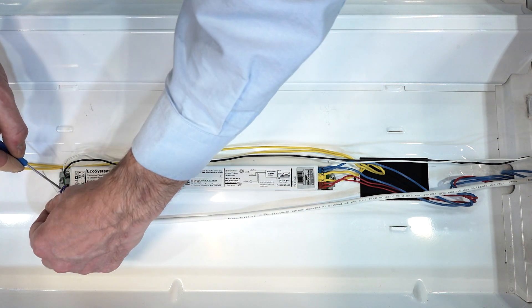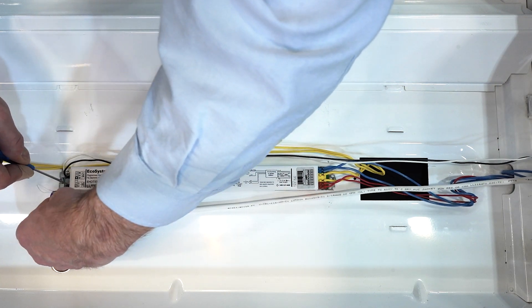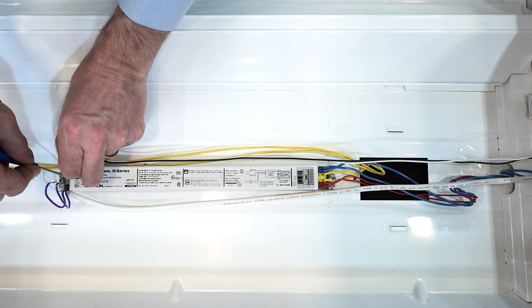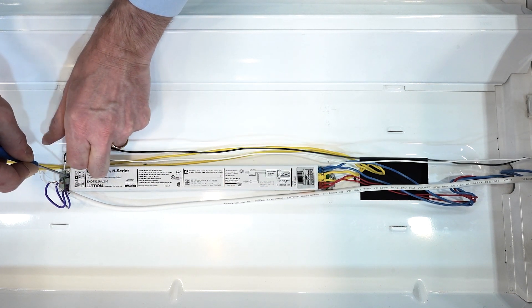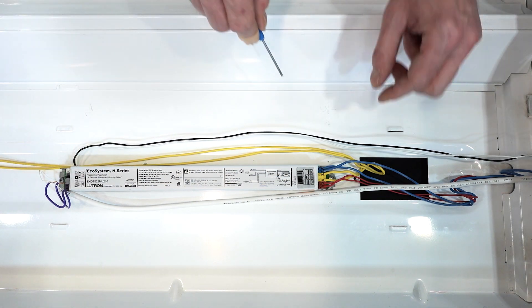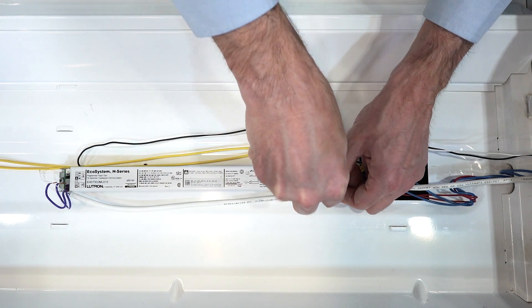Then, you can unwire the existing ballast. Start with disconnecting the ecosystem wires if present, then disconnect the power wires. Disconnect the lamp wires. The number of lamp wires may vary depending on the number of lamps you have in the fixture.